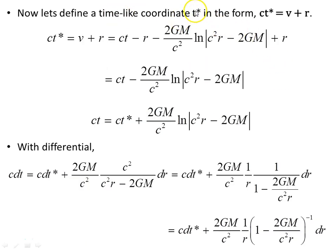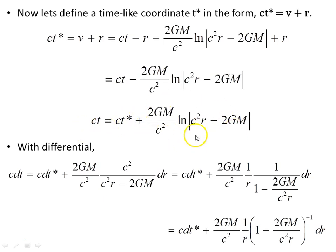Let's define a timelike coordinate t* where ct* equals V plus r. Since V was this object here, the minus r and plus r cancel, leaving this expression. Solving for ct, we get ct equals ct* plus the logarithmic term, and taking the differential, c dt equals c dt* plus this object. Factoring out r, we arrive at this nice expression.